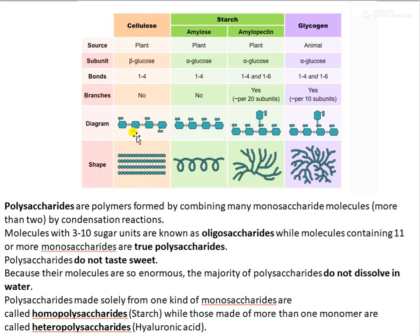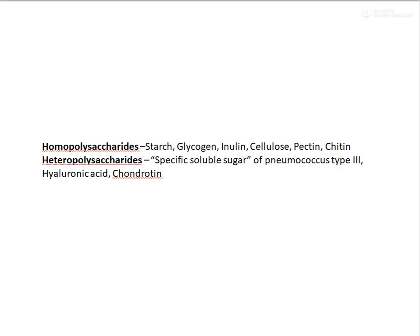When a polysaccharide is made up of one type of monomer — for example cellulose or starch — it is called a homopolysaccharide. But if a polysaccharide is made up of different types of moieties, it is called a heteropolysaccharide. So polysaccharides can be divided into homopolysaccharides and heteropolysaccharides based on the type of monomers present. Starch, glycogen, inulin, cellulose, and pectin are homopolysaccharides, while hyaluronic acid, chondroitin sulfate, etc. are heteropolysaccharides.